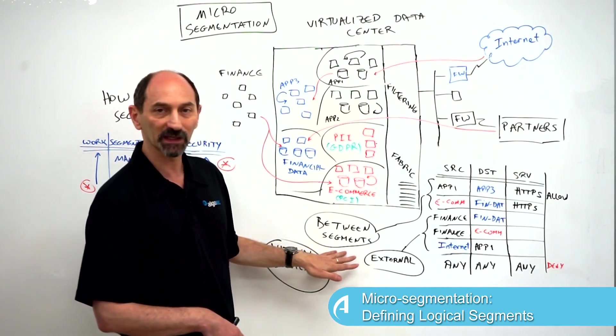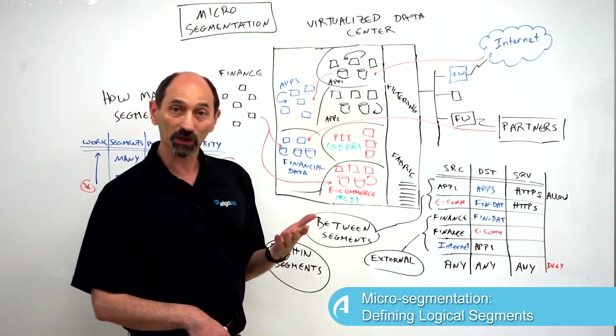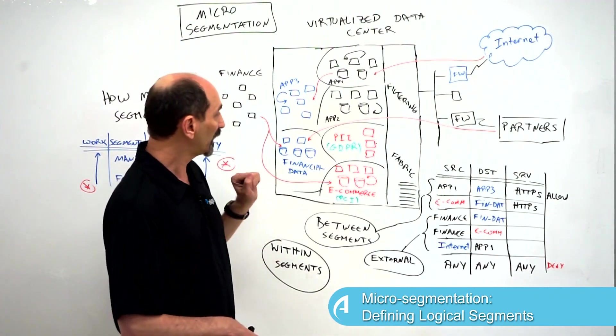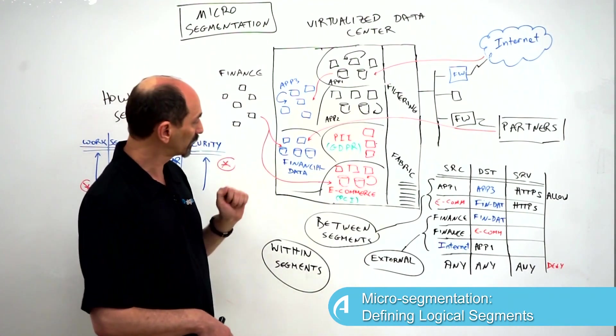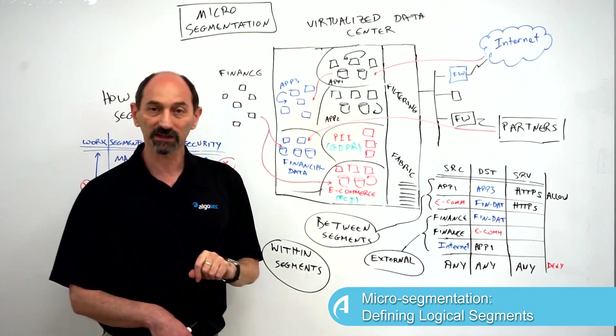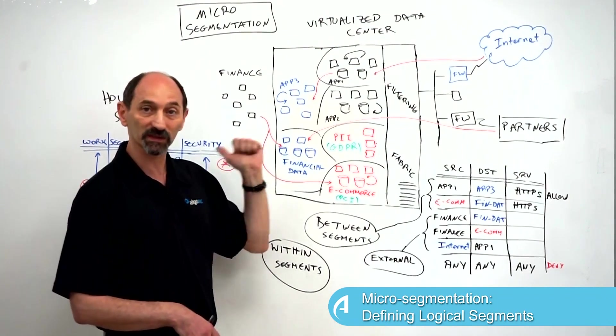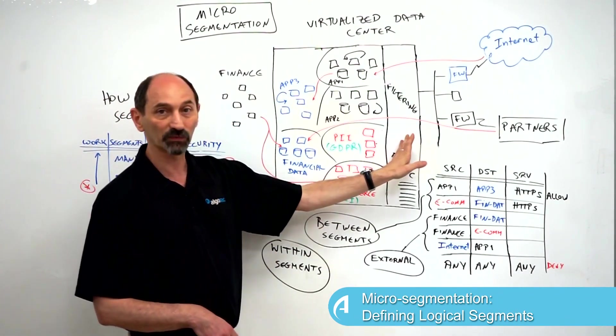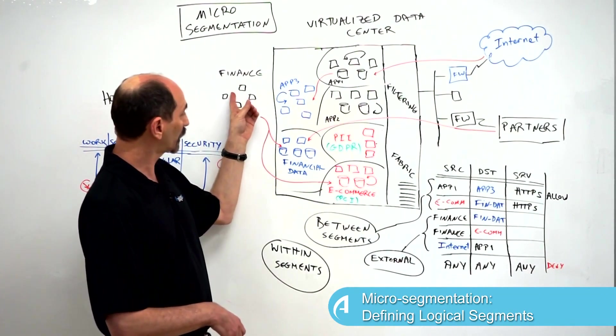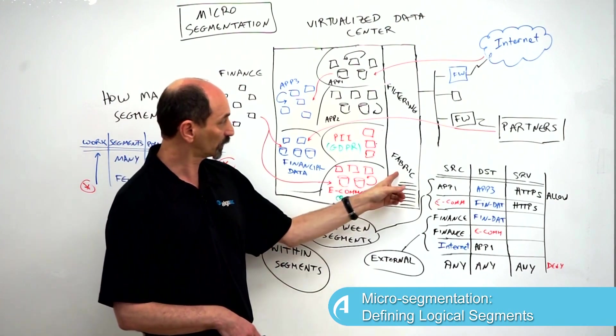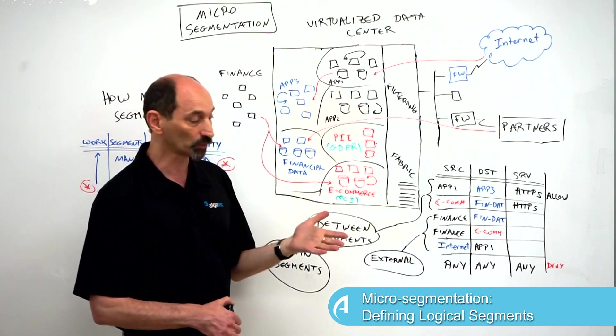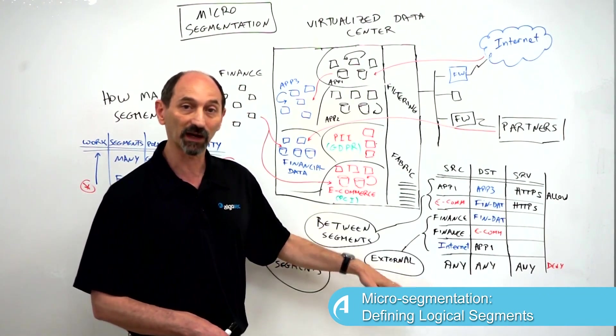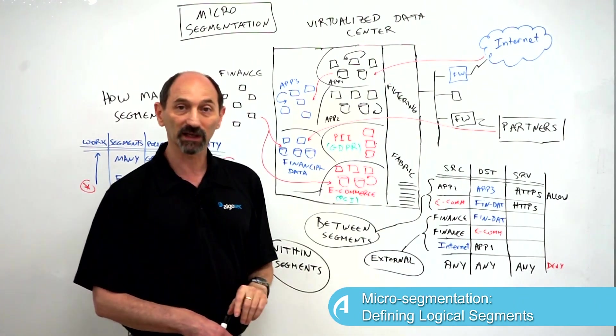We also need to write rules for traffic that comes into or goes out of the data center. Imagine you have people in the finance department that need to connect to the financial data inside the data center. Their desktops are outside of the data center, so these systems are not strictly under the control of the filtering fabric. However, the flows coming from them into the data center are visible to the fabric and need to be controlled and must have rules supporting them. So we will have a certain amount of rules referring to external entities that are outside of the data center that need to be inside the fabric.